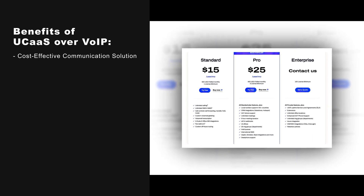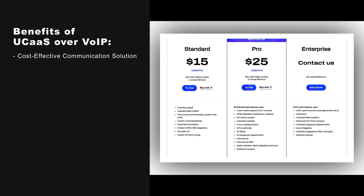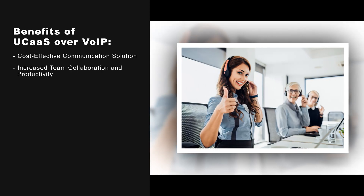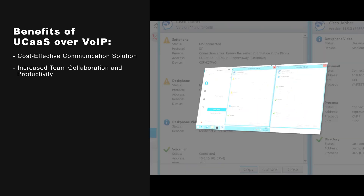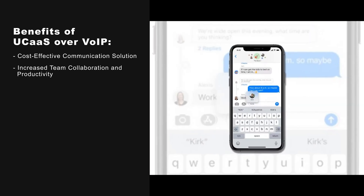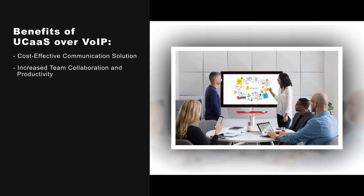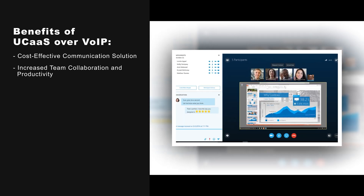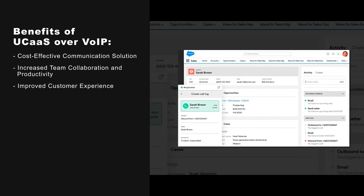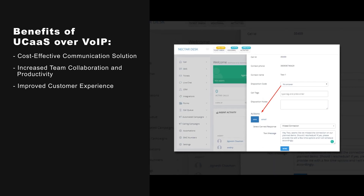While VoIP certainly has major benefits when compared to a traditional landline phone, there's no question that UCaaS offers far more, especially for growing businesses. UCaaS provides a cost-effective communication solution with bundled monthly or annual plans offering unlimited communication across multiple channels, and increases team collaboration and productivity through advanced tools such as team member availability indicators, real-time file sharing, co-editing, commenting, and user tagging. It also improves customer experience with tools like real-time agent assist and CRM features providing data like order history and account status, and even notes from other agents.